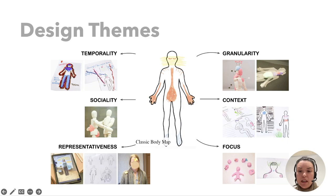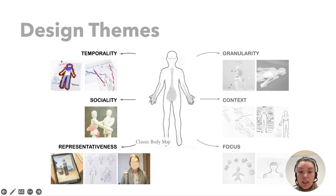In relation to the design themes, our analysis yielded six recurring themes in the prototypes that participants built: Temporality, Sociality, Representativeness, Granularity, Context, and Focus. These themes capture the different ways in which our participants thought that body maps could be advanced to better address a plurality of bodies and aspects that shaped their somatic experience. Here I only have time to discuss three of them, but I refer you to our paper for the complete annotated portfolio.